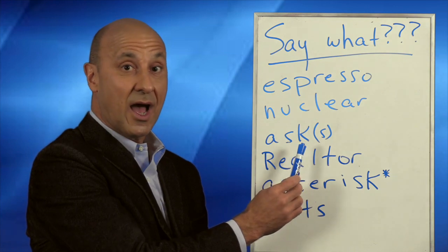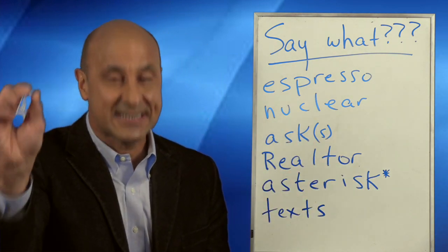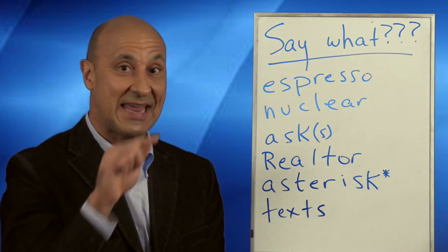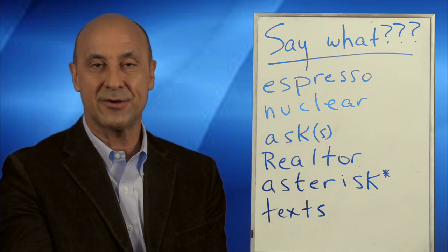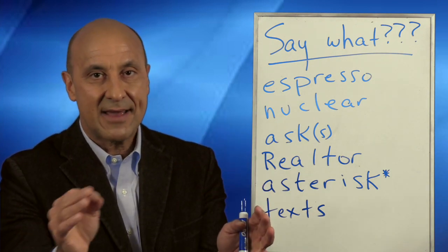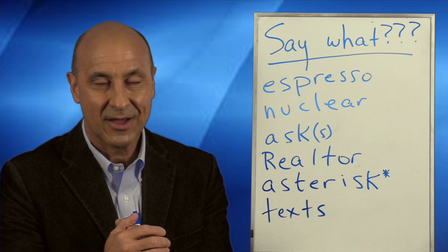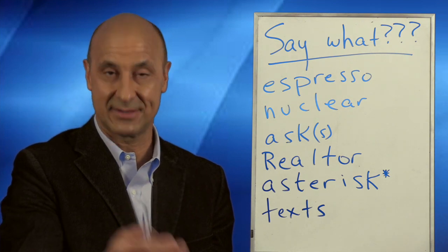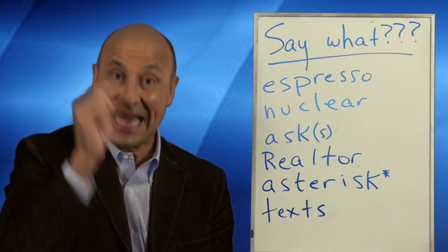We'll start with just the sound: ass. Add the K — ask. When you say he asks, the S comes first, then the back of your throat closes for the K, and then you have the S again. Double points for you. Every day he asks me the same question. They ask all the time. I ask all the time. The S comes before the K.